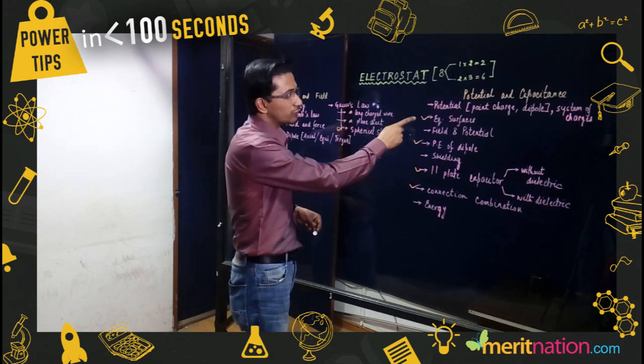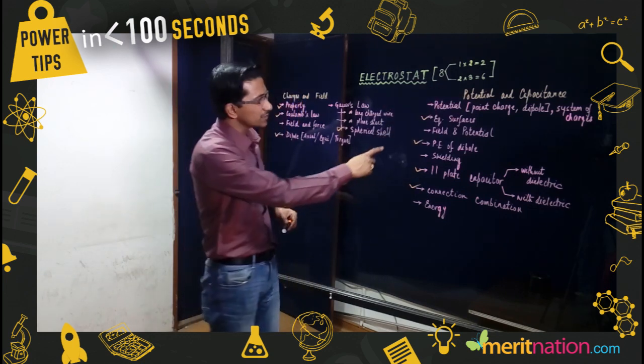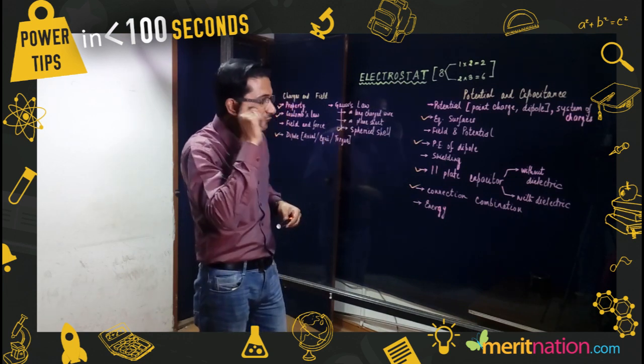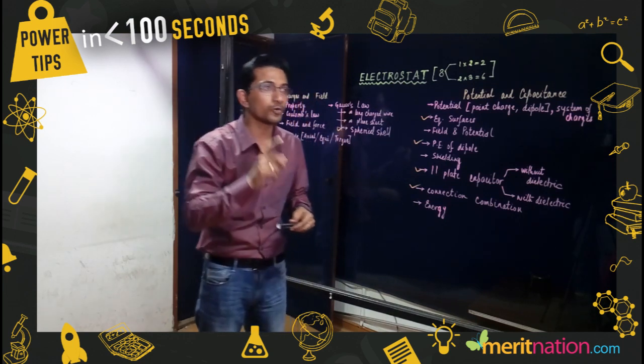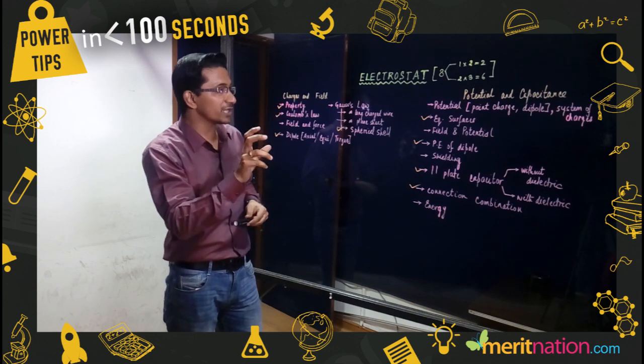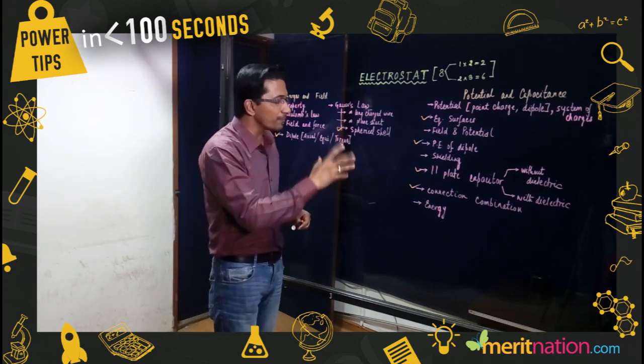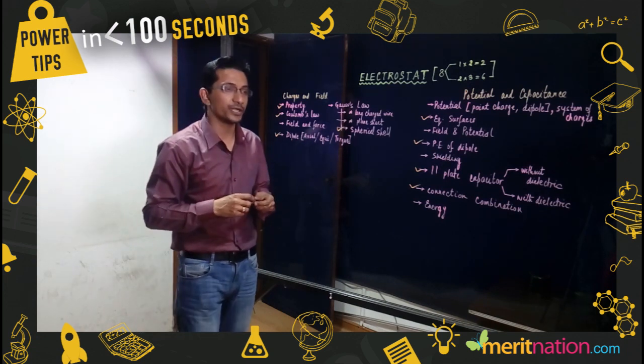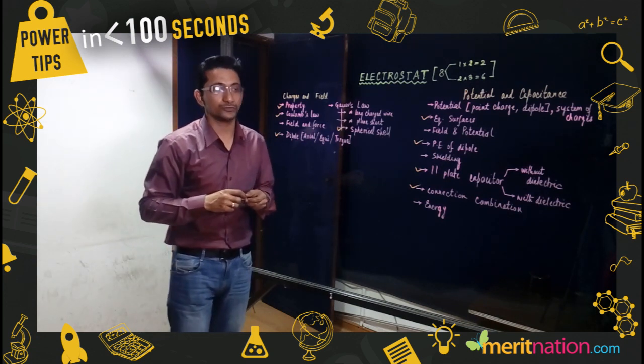Coming to potential and capacitance: equipotential surfaces and their properties, potential energy of a dipole, parallel plate capacitor is of utmost importance. You have to be clear about both with dielectric and without dielectric configuration. And finally, combination of capacitors and the energy contained in the capacitor is very very important. That's all for electrostatics.